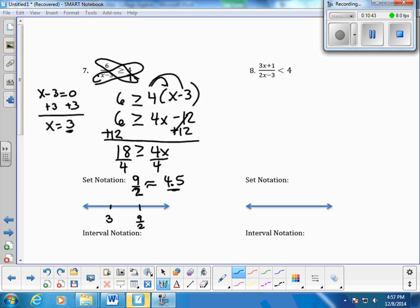So, let's pick a number to the left of 3 and test it. A number less than 3, I'm going to test 2. So, if I put a 2 in right there, it would be 2 minus 3 greater than or equal to 4. So, 6 over negative 1, negative 6 is greater than or equal to 4. That's false.